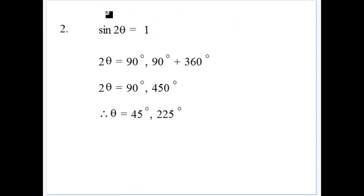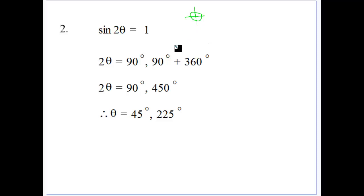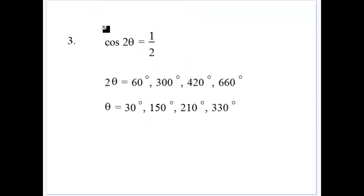Let's have a look at another problem. Sine of 2 theta is equal to 1. If it was just sine of theta equal to 1, it would be 90. So our related angle is 90, and that's the only place in the complete circle where sine of something equals 1. So we have that situation where we just add 360, because that's the second revolution since it's 2 theta. So that gives us 450, but then we divide by 2. When theta equals 45 or 225, we get sine of 2 theta equal to 1. You can check: sine of 2 times 45 gives you 1, and sine of 2 times 225 should give you 1 as well.